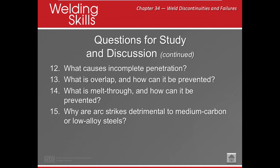What is melt through and how can it be prevented? Melt through occurs in butt welds when the arc melts through the bottom of the weld. Melt through can be prevented by reducing the current and increasing the travel speed.